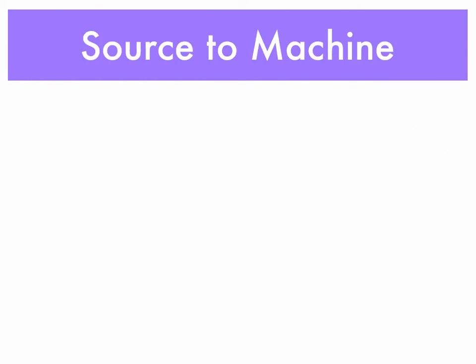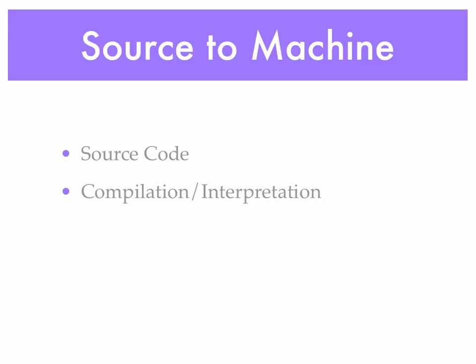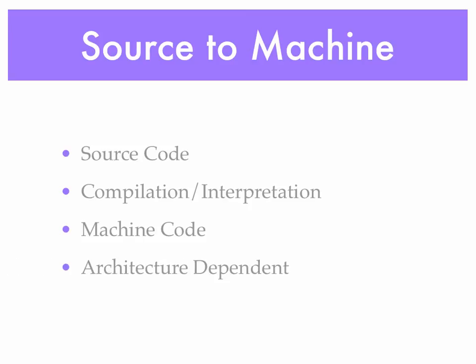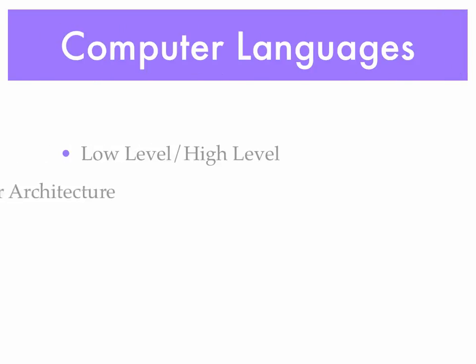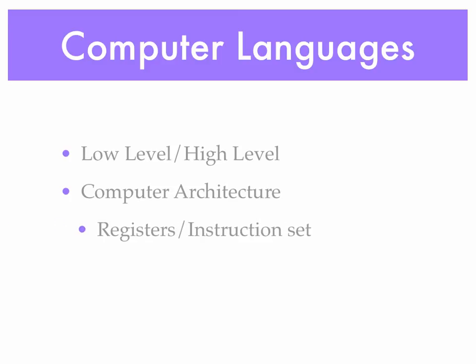When we talk about computers and programming languages, we have to take the source code — what we write — and put it into a form that the computer will understand. We write source code, and that source code has to be either compiled or interpreted into machine code. Machine code is what your computer understands — we represent that by ones and zeros. Your machine code is dependent on the architecture of your chip. Architecture is the number and width of the registers in the chip and the instruction set understood by your computer.